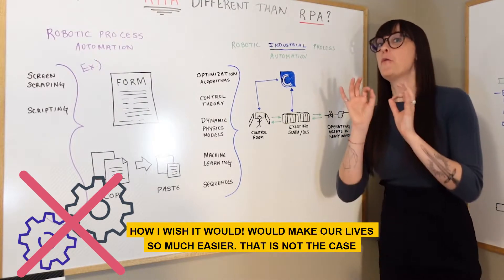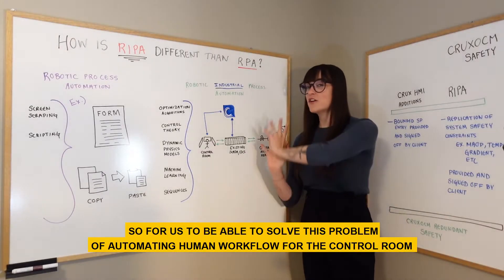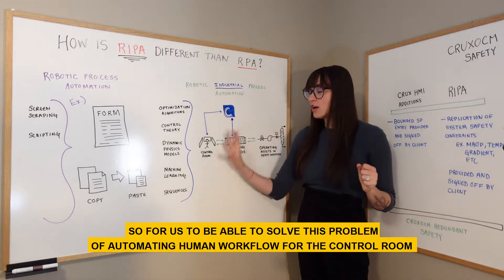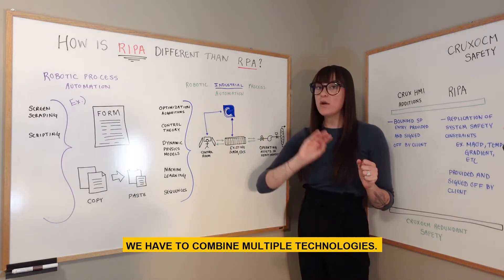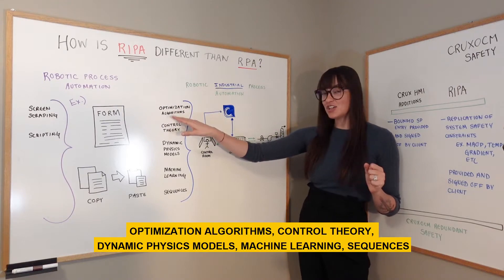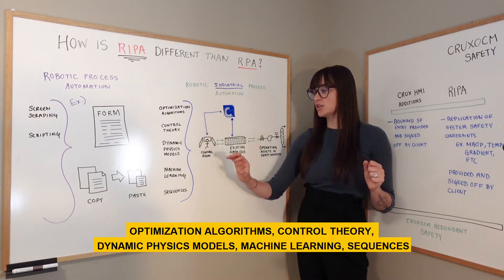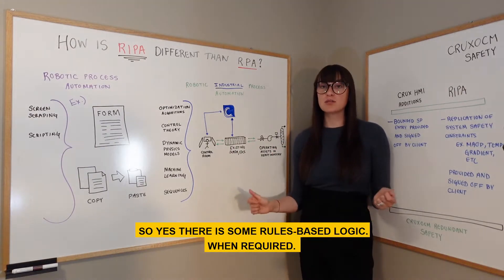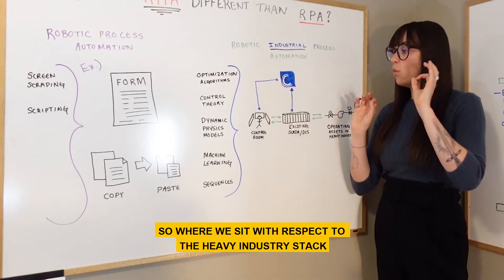I wish it would — it would make our lives so much easier — but that is not the case. To solve the problem of automating human workflows for the control room operator, we have to combine multiple technologies: optimization algorithms, control theory, dynamic physics models, machine learning, sequences, and yes, some rules-based logic where required.